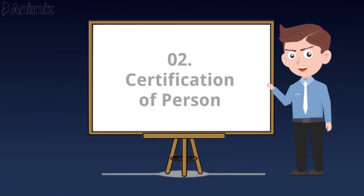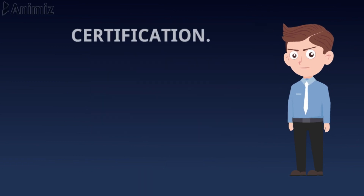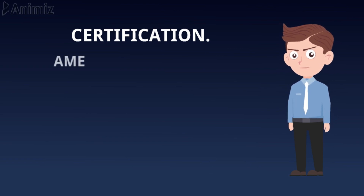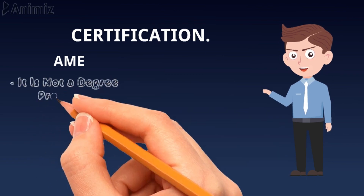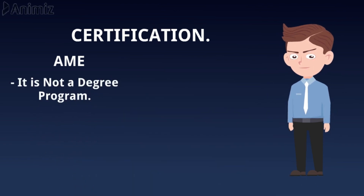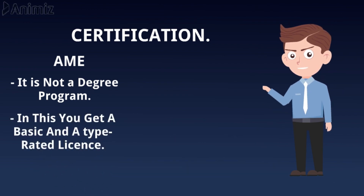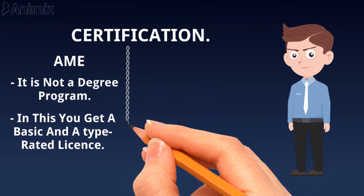The second point of difference is certification of the person. In this point we will discuss what honor, degree, or certificate we get in these two courses. AME is not a degree program but a license-based engineering. In this course you get a basic license and a type-rated license. If you want to know more about this, you can click on the icon above or check the link in the description box.